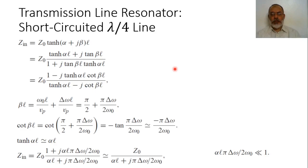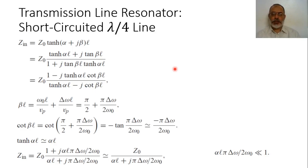In the previous video, we studied the transmission line resonator of a short-circuited lambda-over-2 transmission line, and we said that for a short-circuited lambda-over-2 transmission line, the equivalent circuit is a series RLC resonant circuit. In this video, we are going to continue discussing transmission line resonators with two more examples: the first is a short-circuited lambda-over-4 transmission line, and the second is an open-circuited lambda-over-2 transmission line resonator.